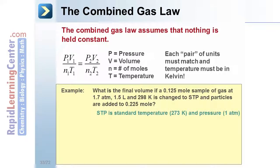This problem gives a lot of information. But remember that STP is hidden information, giving you temperature and pressure. The initial pressure is 1.7 atm. The initial volume 1.5 liters. The initial moles is 0.125 mole. And the initial temperature is 298 Kelvin.